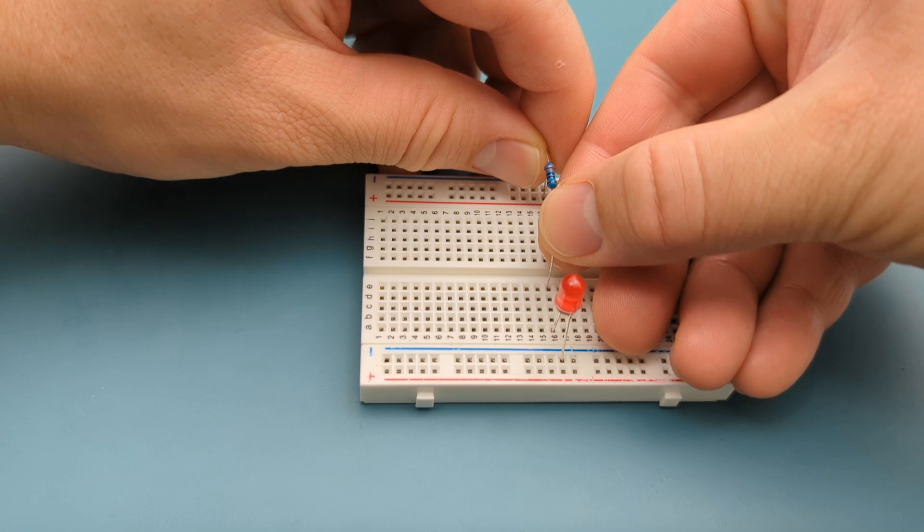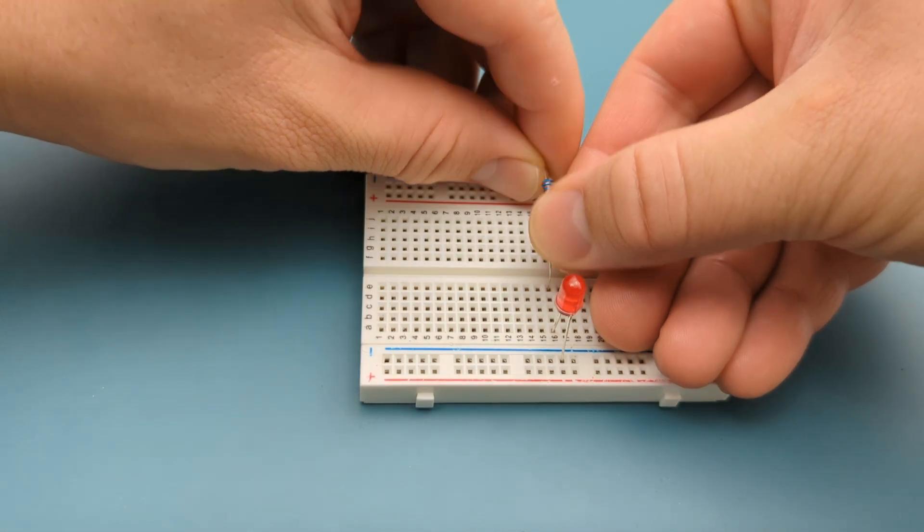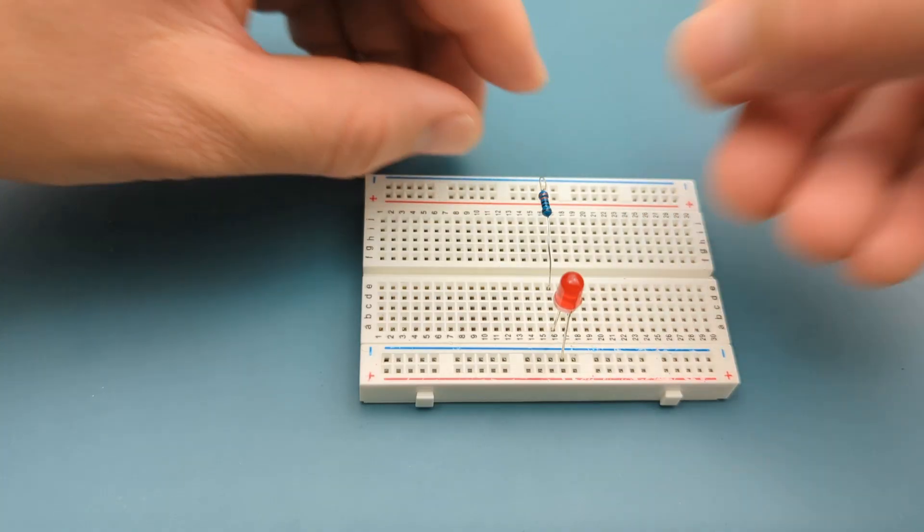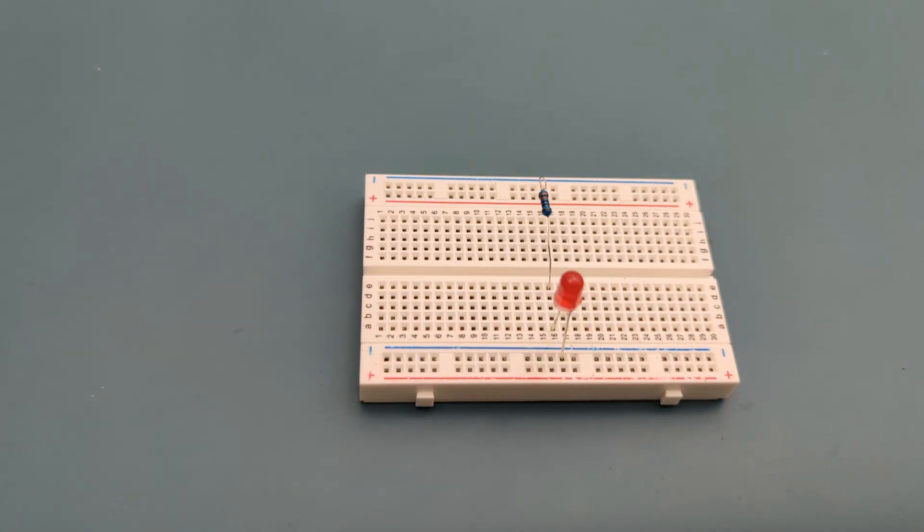If you don't have a 350 ohm resistor, you can use the nearest value. For this setup, I'm going to use a 330 ohm resistor. With 330 ohms, the current is about 21 milliamps.